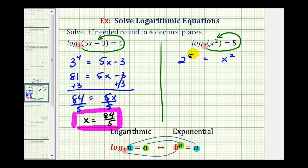Well, two to the fifth is equal to 32, so we have 32 equals x squared. Now we're solving for x, so we'll take the square root of both sides of the equation.